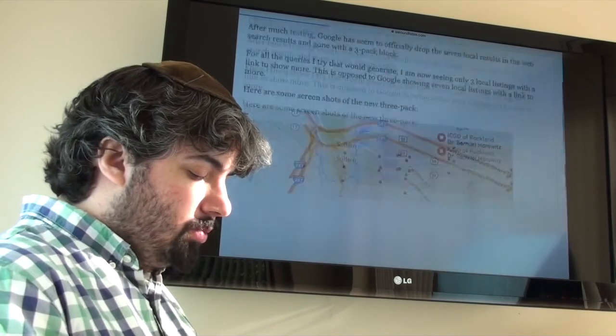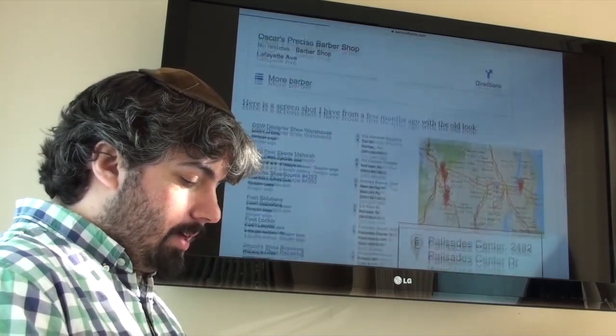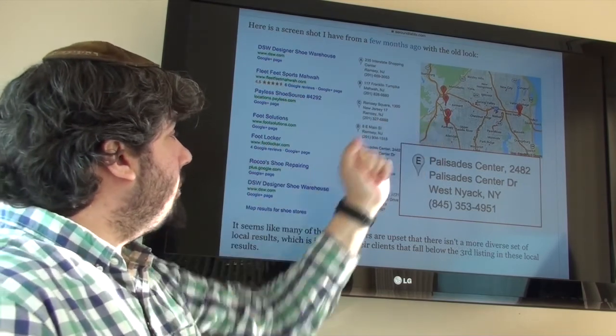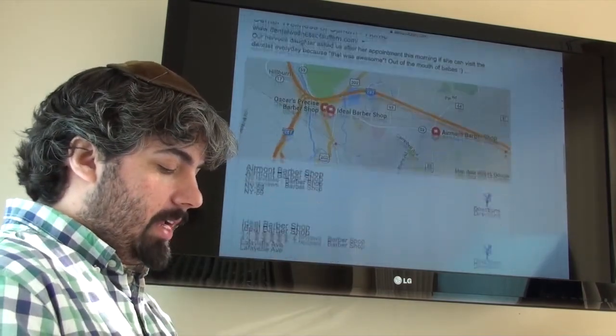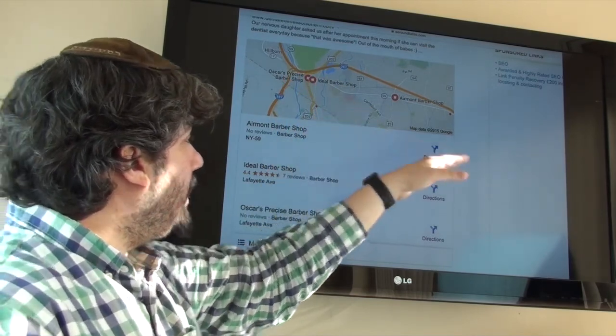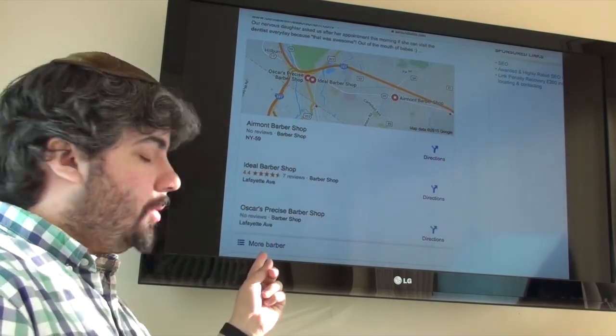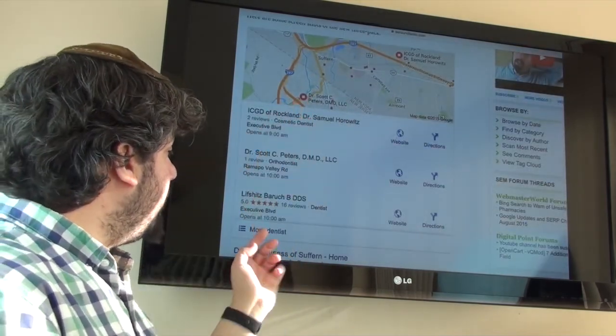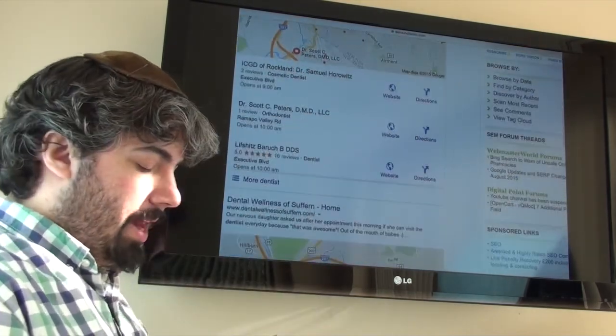So here's some pictures. This is what it looked like in the past. It used to show a bunch of listings with a map on the right hand side. Now it kind of looks more like this where you have a map at the top with the ads on the right and then three listings with a link to more. So here's another screenshot, map, three listings, a link to more and then the organic results.